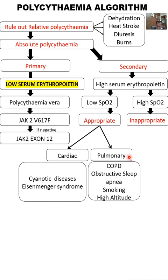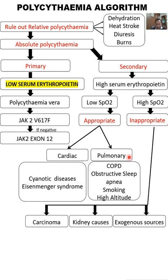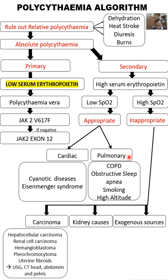In contrast, when SpO2 is normal but EPO is still high, it is an inappropriate response. This happens in malignant conditions: the body still makes red cell mass despite adequate oxygen. Tumors implicated include hepatocellular carcinoma, renal cell carcinoma, hemangioblastoma, and less commonly pheochromocytoma and uterine fibroids. For renal cell carcinoma, ultrasound is the easiest initial investigation. For other carcinomas, a CT of the head, abdomen and pelvis can rule out malignant causes.